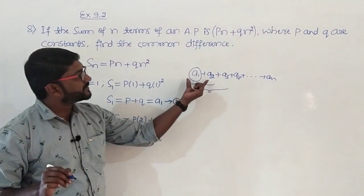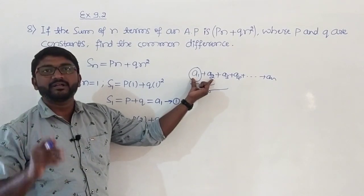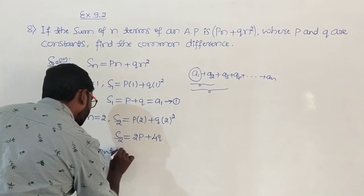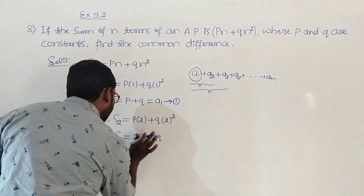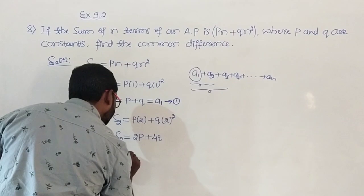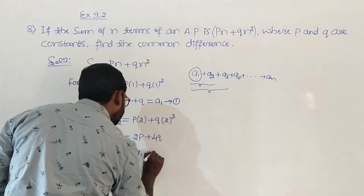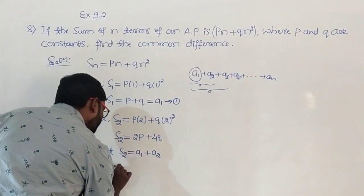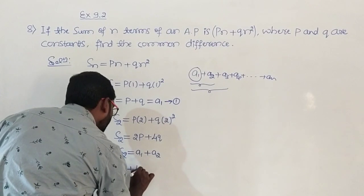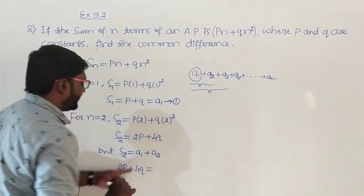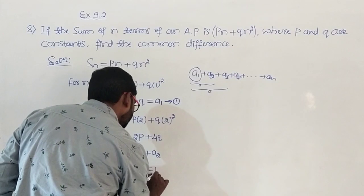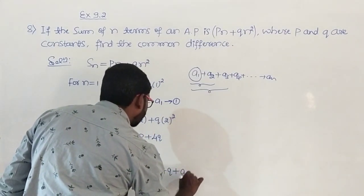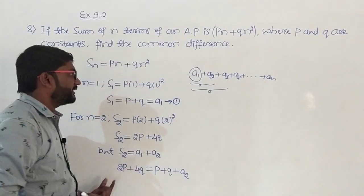What is S2? S2 is the sum of the first two terms, which is a1 plus a2. So S2 equals a1 plus a2, which equals 2p plus 4q. Now, a1 is p plus q, so we have 2p plus 4q equals p plus q plus a2. Now take these two terms to the left hand side.